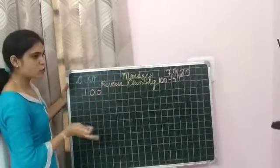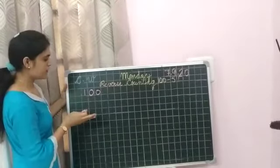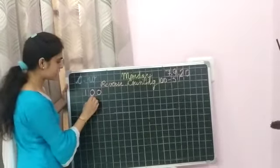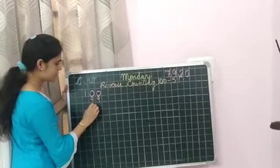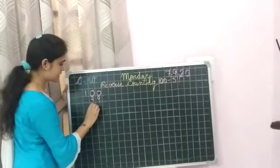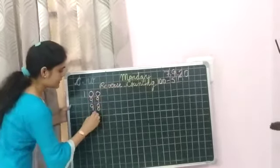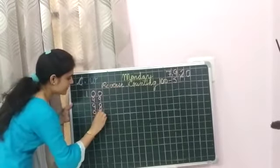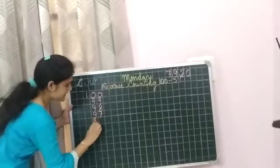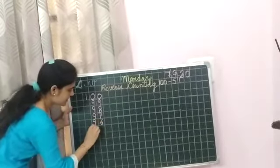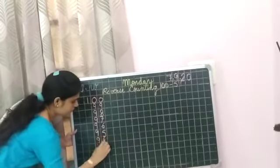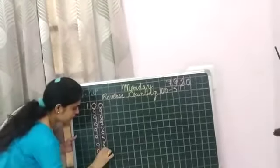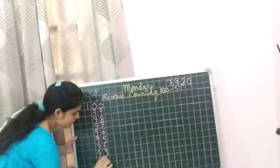As it is backward counting, we will write, yes, tell me what we will write. Ninety-nine. Very good. Then, yes, tell me. Yes, ninety-eight. Then, ninety-seven. Ninety-six. Then, ninety-five. Ninety-four. Ninety-three. Ninety-two. And, ninety-one.